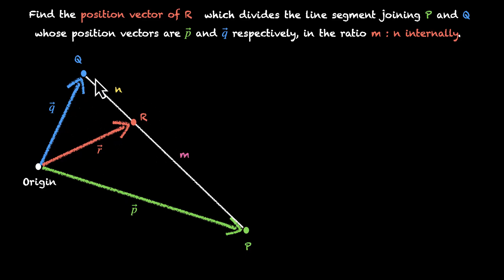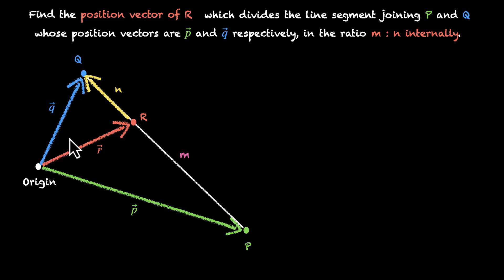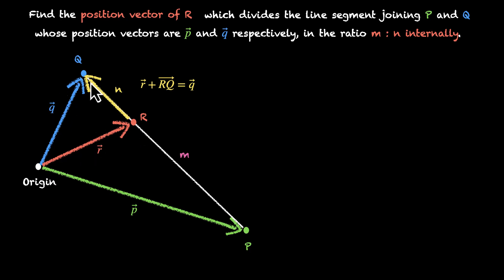We can do this by looking at these two triangles. Let's look at the small triangle. In this triangle, we have q vector and r vector, and let's call the yellow vector rq vector. To go from origin to q, we have a direct way via q vector, and an indirect way through r: r vector plus rq vector. So by the triangle law of addition, r vector plus rq vector equals q vector. Therefore rq vector equals q vector minus r vector.